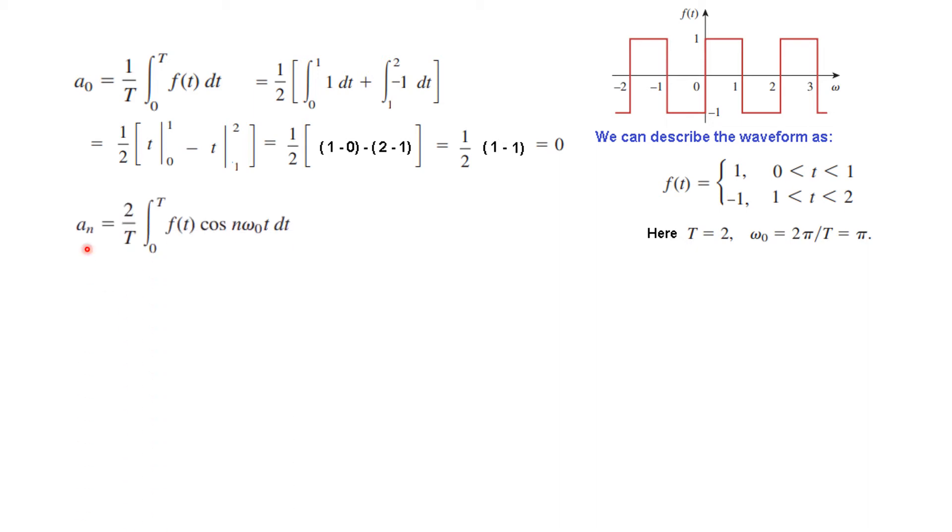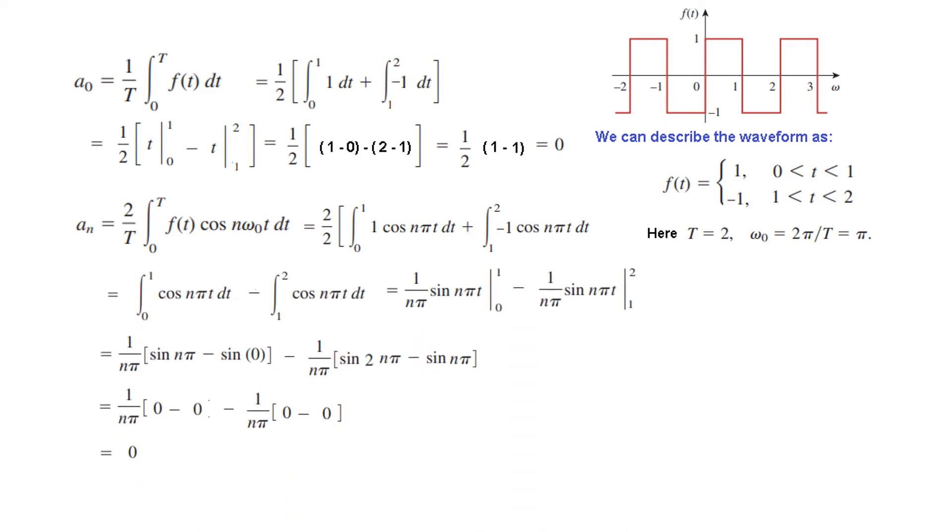Then we come to an. Same technique, same way we will divide it into 2 parts. So dividing into 2 parts, putting the value and then simplifying. This is simplified form. Take integral, integral of cosine. Integral of cosine is sin n pi t and divided by this constant n pi. And then putting the limit for both cases.